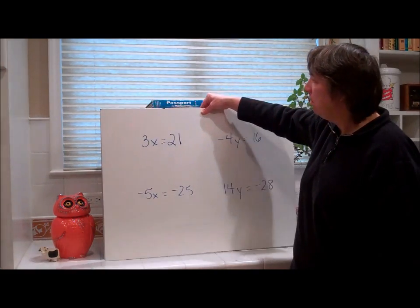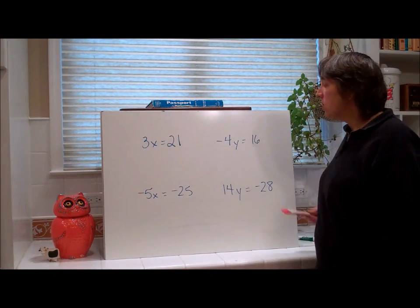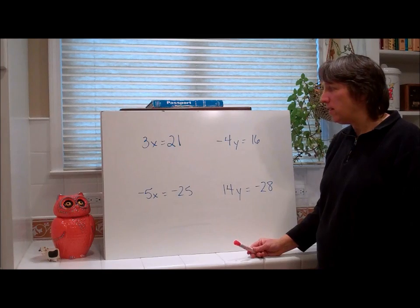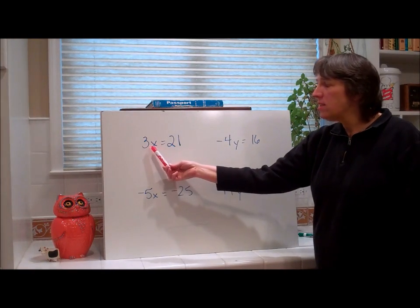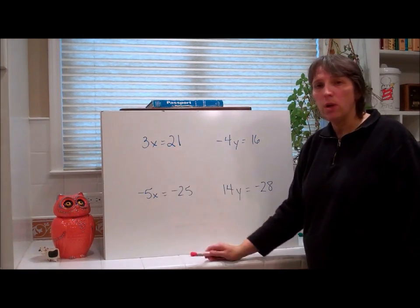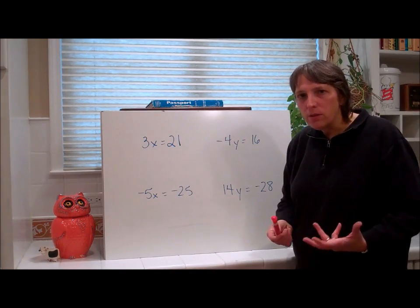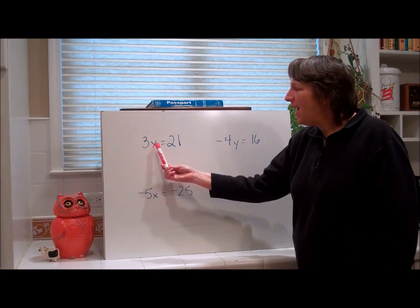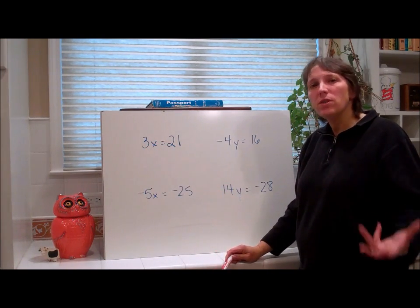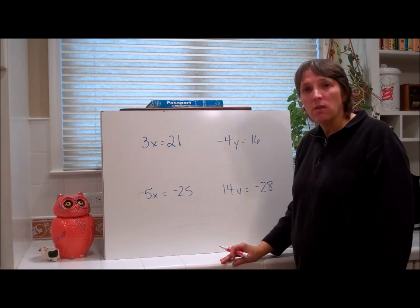Here we have these one-step equations, and these are all multiplication equations. How do I know that? Because how do you say this? We say 3x equals 21, but what's really happening to the variable? 3 times x equals 21. Well, how do you undo multiplication? You divide. That's the inverse.